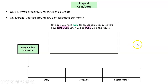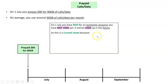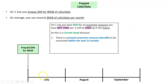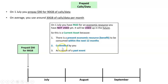On the 1st of July, you've basically paid for an economic resource — your data and calls — and you have not yet used it; it will be used in the future. When you have an economic resource to be used in the future, we call that an asset, and in this case it's a current asset. It meets the three criteria: there is a present economic resource or benefit to be consumed within the next 12 months — you can make calls and use data for July, August, and September. It is controlled by you; no one else can use your data or your phone. And it was the result of a past event: on the 1st of July, you prepaid for three months' worth of phone.